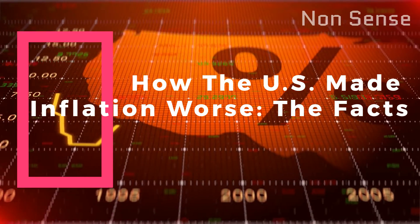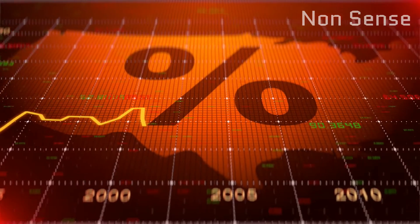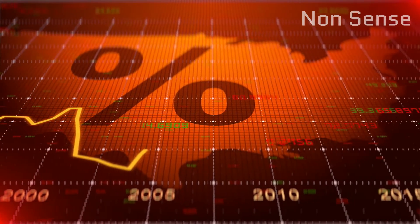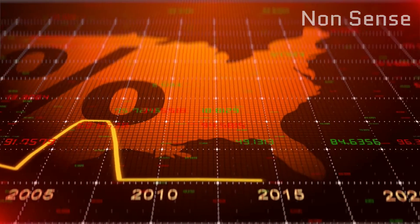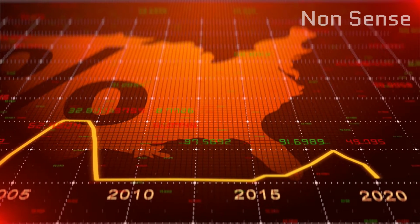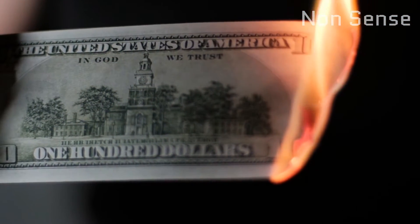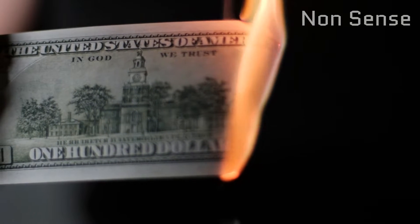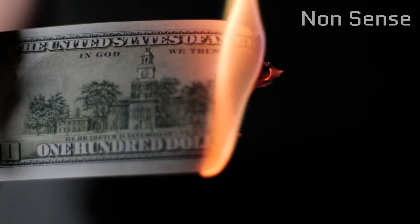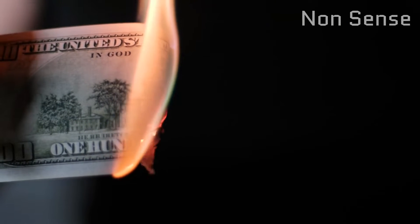Inflation became a problem in the United States for a variety of reasons. One reason is that the country began to produce more money than it had in circulation, leading to an increase in prices, which in turn led to more money being printed, creating a vicious cycle. Additionally, the U.S. government began borrowing money from other countries at high interest rates, which put further upward pressure on prices.